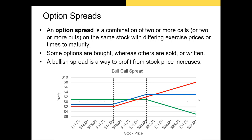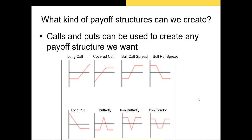Next we have option spreads — a combination of two or more calls or puts on the same stock with differing exercise prices or times to maturity. This strategy has defined maximum and minimum amounts you can gain or lose. A bull call spread involves purchasing a call option with a strike price of $17 per share and selling a call option with a strike price of $21 per share. The maximum you can lose is bounded at $1. Using combinations of options you can create any payoff structure you want, including more complex strategies like the iron condor or reverse iron condor.